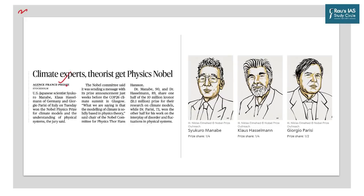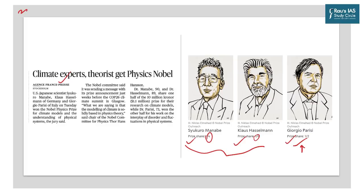The final topic: Climate Experts and Theorists Get Physics Nobel, appearing on page number one. Three people — Syukuro Manabe, Klaus Hasselmann, and Giorgio Parisi — have been awarded the Nobel Prize in Physics. The prize is shared between two sets of work: Manabe and Hasselmann share one-half equally for their work on climate modeling, while Giorgio Parisi receives the other half for a separate contribution. From the UPSC prelims perspective under science and technology, it is important to understand their work and contributions to science.